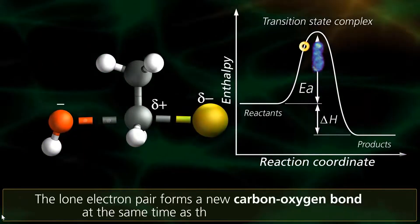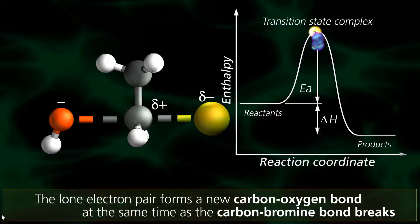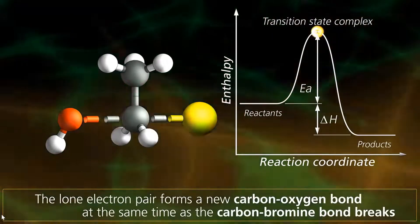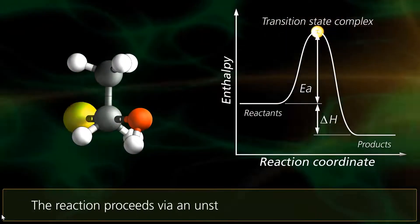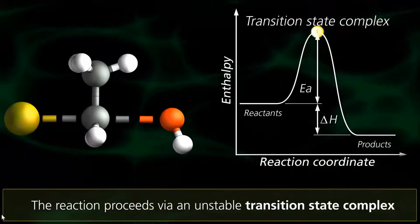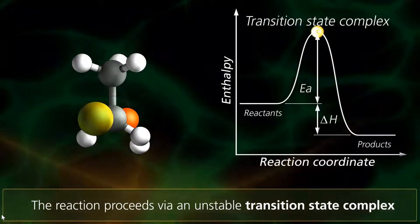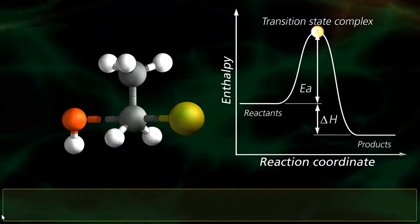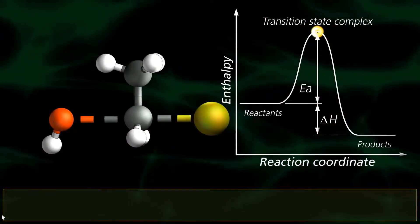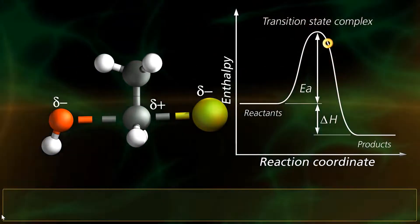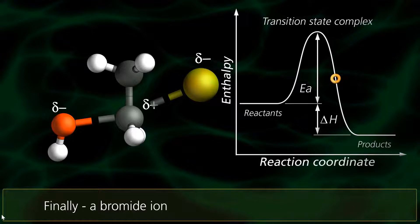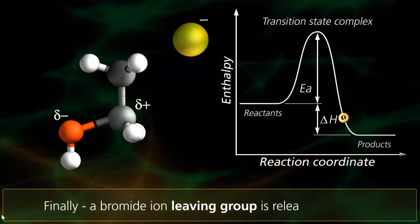The lone electron pair on the nucleophile forms a new dative covalent bond with the partially charged carbon atom, to give an unstable transition state complex. The complex behaves like an umbrella blowing inside out as the bonds rearrange into a tetrahedral structure. A bromide ion, called the leaving group, is released.